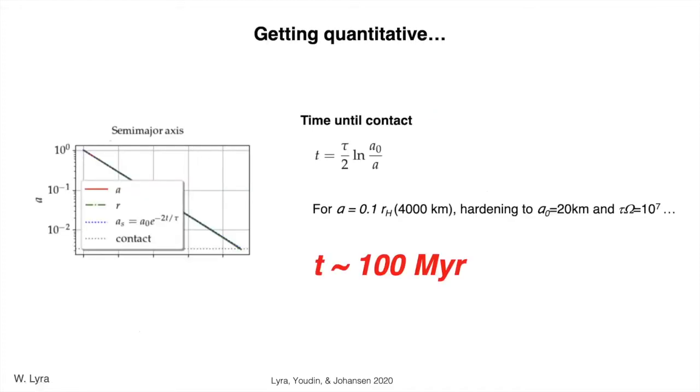However, the time to contact when you plug in the numbers turns out to be still very, very, very high. It's about 100 million years. That's because these objects are so big that their drag time is still very, very large. The drag is weak. They have too much mass to be moved around by gas, right? So there is another mechanism that we have to consider.